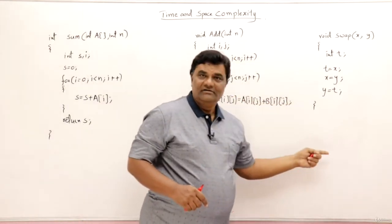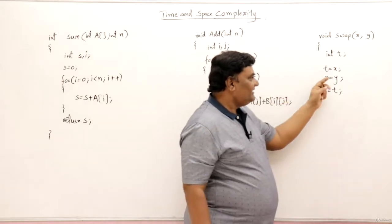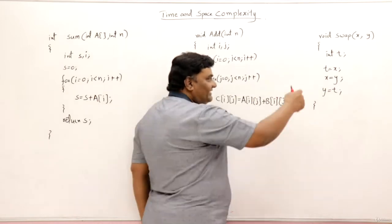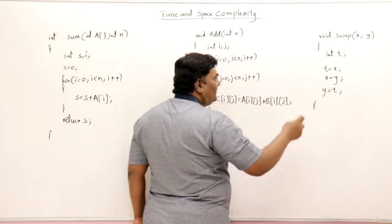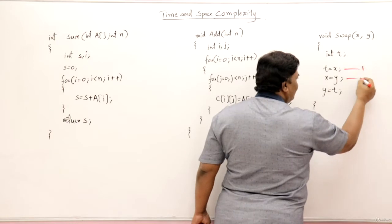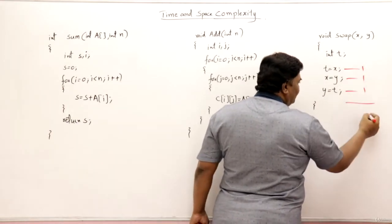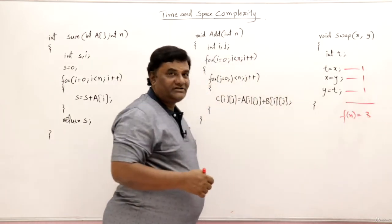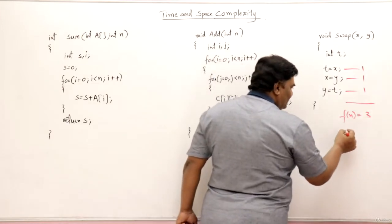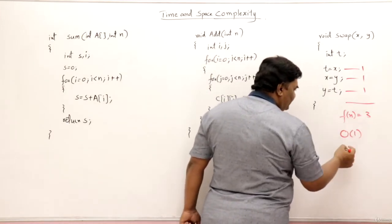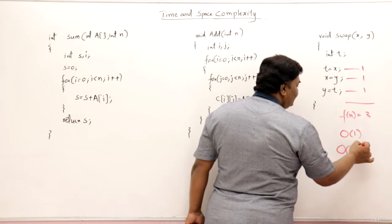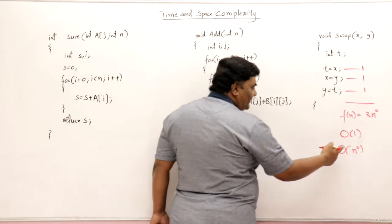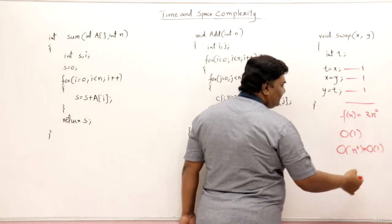First I will take this one. This is a swap function taking two parameters and interchanging the values of X and Y. What are the statements inside this? These are the three statements. How much time does each statement take? One unit of time because it is just an assignment. So total time is three. So the function of n is three. So we got the time function as three, and that three is constant, order of one. Why is it constant? Because degree of n is zero here. Three means three times n to the power of zero. So anything to the power of zero is one. So it is constant.